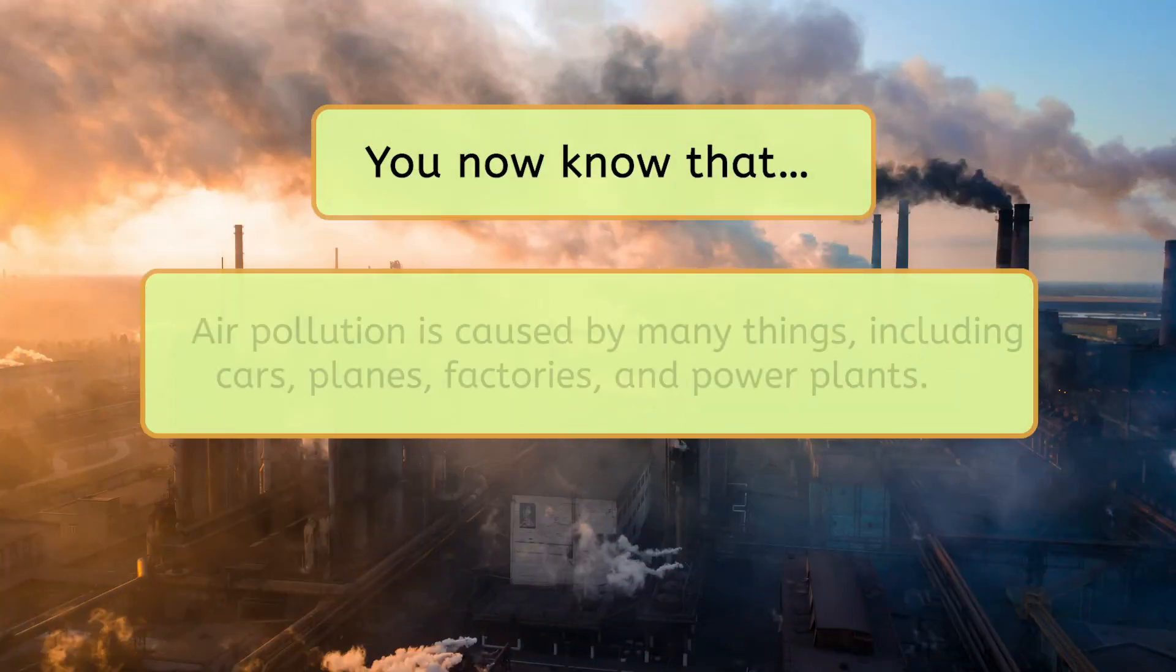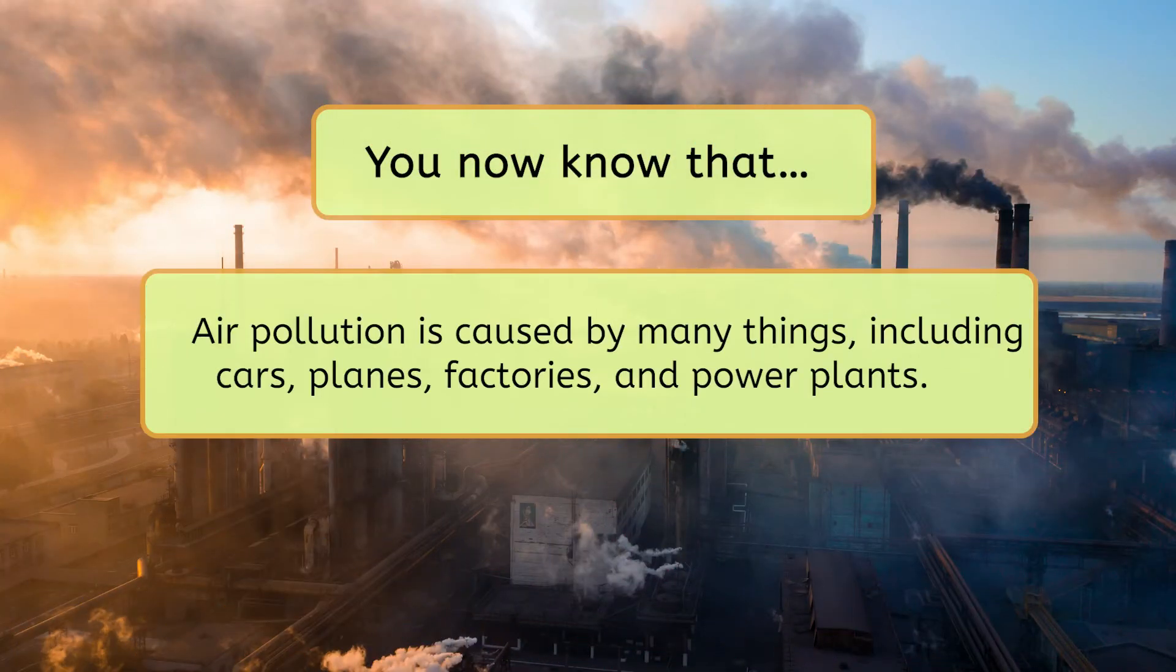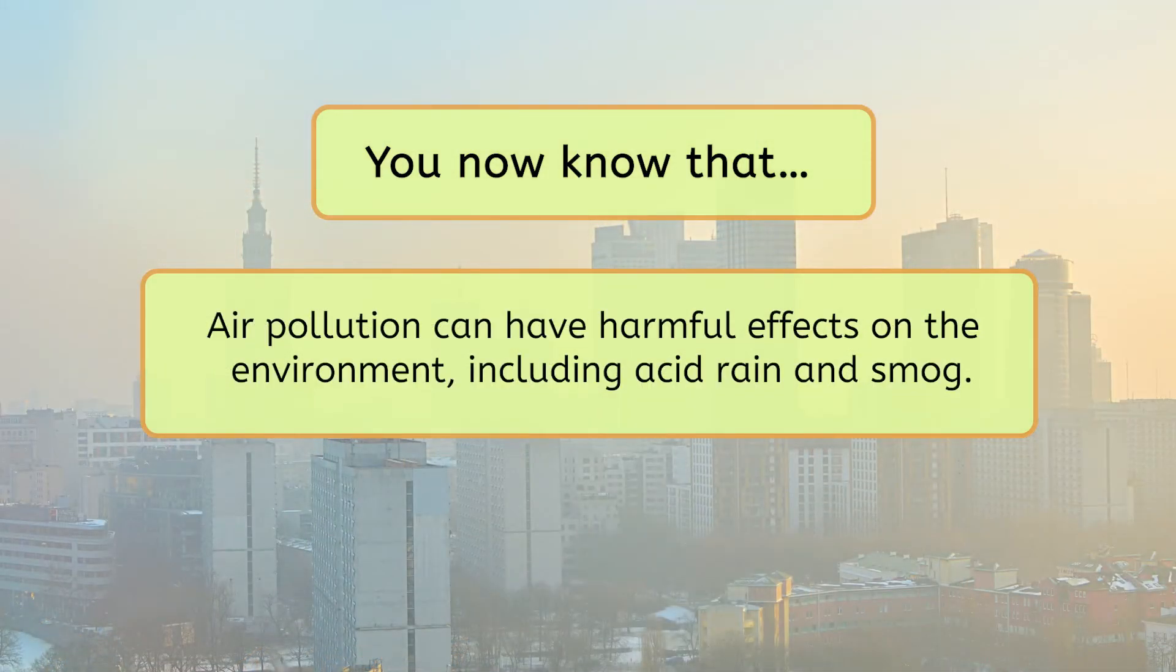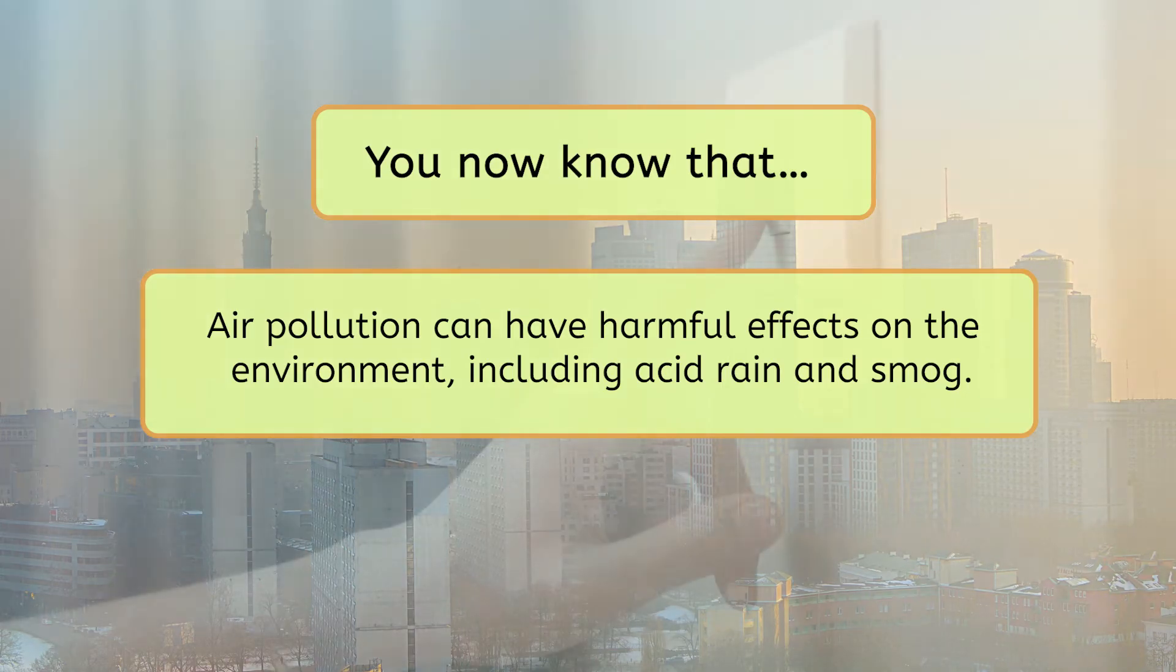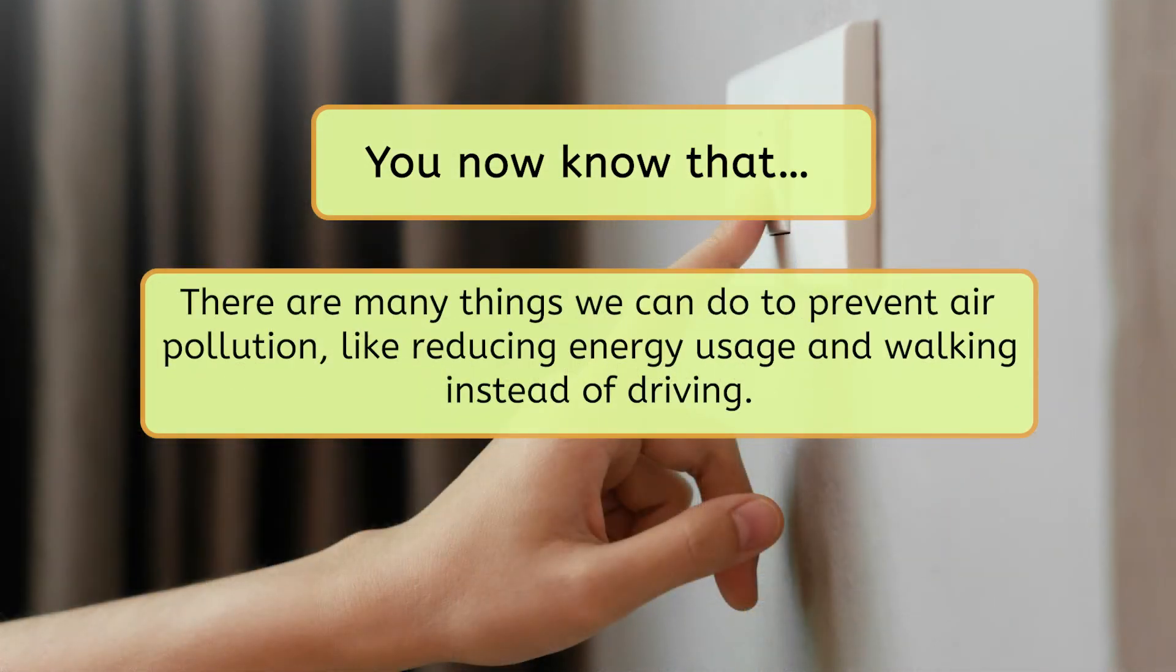So let's recap what we've learned today. You now know that air pollution is caused by many things, including cars, planes, factories, and power plants. Air pollution can have harmful effects on the environment, including acid rain and smog. And there are many things that we can do to prevent air pollution, like reducing the energy we use and walking instead of driving.